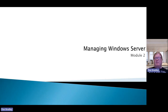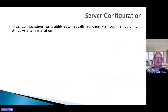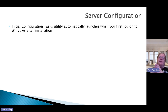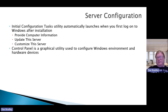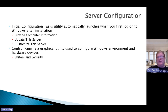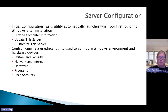Let's take a look at some information from Module 2: Managing the Windows Server. In server configuration, you have initial configuration tasks. The initial configuration task utility automatically launches when you first log onto Windows after the installation — you provide the computer information, updates to the server, and customization. The control panel is the graphic utility that you can use to configure the Windows environment, hardware, services, and devices. You can set up configurations for system and security, networks and internet, all the protocols, hardware, programs, user accounts, appearance, customization, clocks, language, region, and everything.